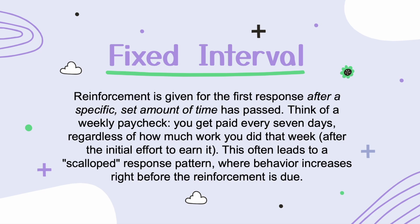So let's put it together. With a fixed interval, reinforcement is given for the first response after a specific set amount of time has passed. Think of a weekly paycheck — you get paid every seven days regardless of how much work you did that week, after the initial effort to earn it. This often leads to a scalloped response pattern where behavior increases right before the reinforcement is due.